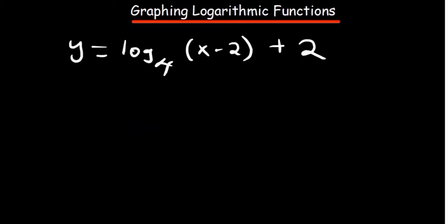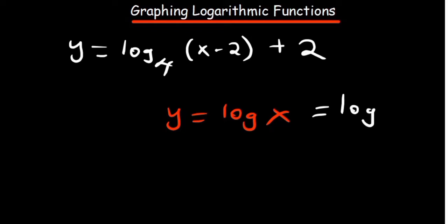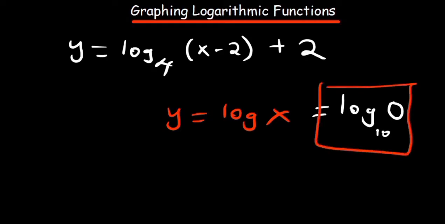The other thing we have to know is that whenever you have y equal to log of x, we understand that log of 0 is basically undefined. If you punch that on your calculator, it's basically undefined. That is basically what gives us the vertical asymptote. So whenever the value inside the brackets is equivalent to 0, then that will be your vertical asymptote.